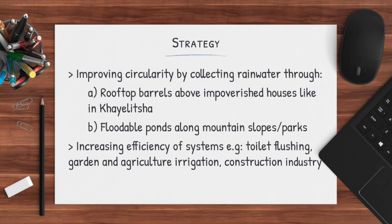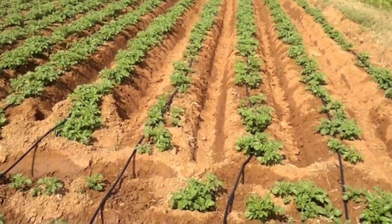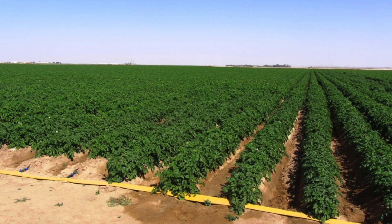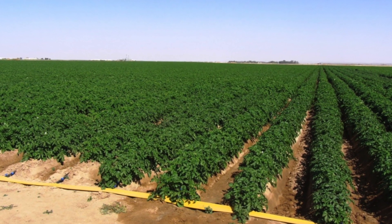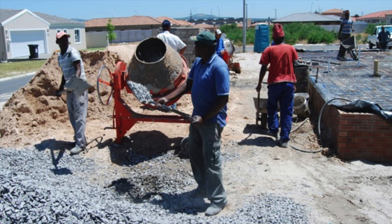The systems we mentioned can be increased in efficiency. The systems we're referencing are, for example, the flushing of toilets, the irrigation of gardens, or even larger-scale irrigation of agriculture or the construction industry, and we will get into how exactly we can increase that efficiency.